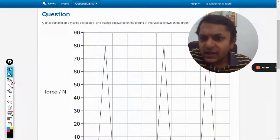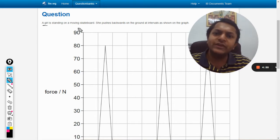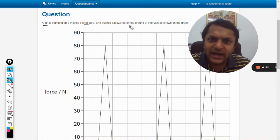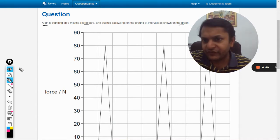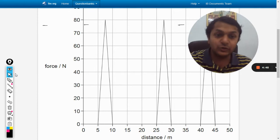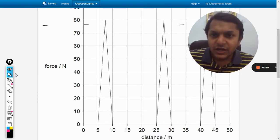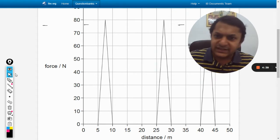Okay, so in this question a girl is standing on a moving skateboard. She pushes backwards on the ground at intervals as shown on the graph. Let's see the graph first. It's really huge here, not fitting in one screen, but let's see.